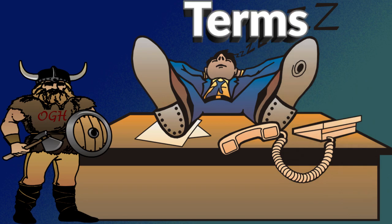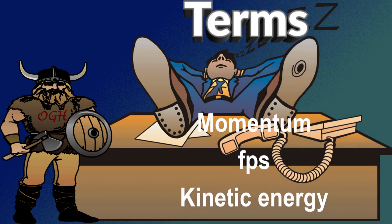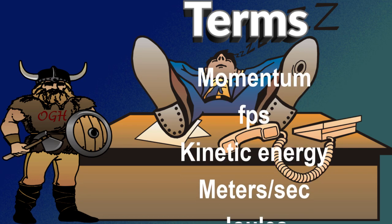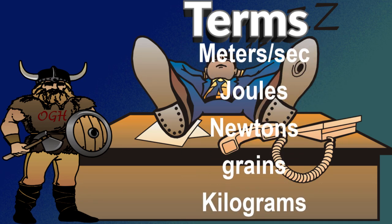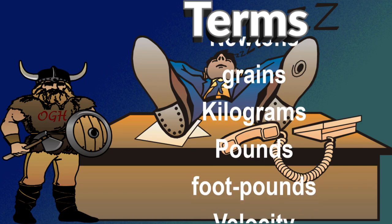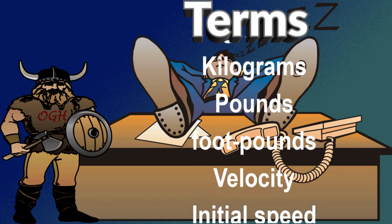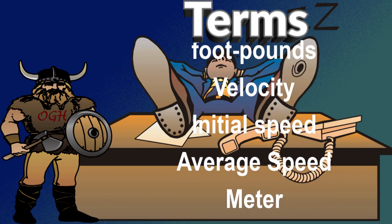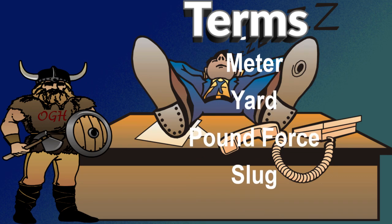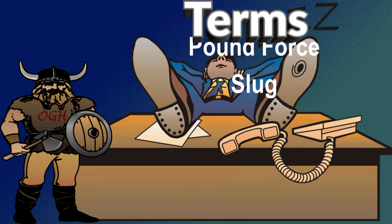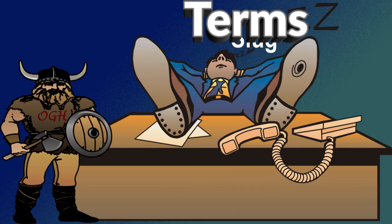In the past I have used terms like momentum, feet per second, kinetic energy, meters per second, joules, newtons, grains, kilograms, pounds, foot pounds, velocity, initial speed, average speed, meter, yard, pound force, and slug. Now I don't plan on talking about all these terms in this video, but you never know where old grumpy hunter is going to go.